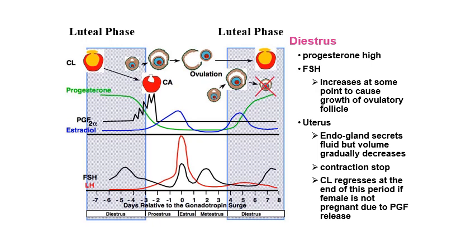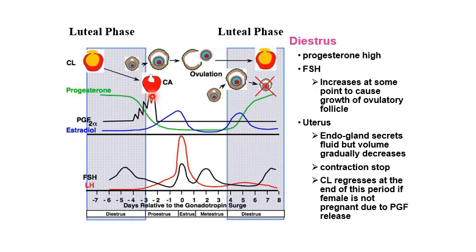The diestrus stage is characterized by a high level of progesterone due to the presence of a fully formed CL or yellow body. FSH increases at some point because of the growth of ovulatory follicles during this time. The endometrial glands secrete fluid but the volume gradually decreases, and uterine contractions stop. The CL regresses at the end of this period if the female is not pregnant, due to PGF2-alpha production from the uterus, causing the CL to regress into the corpus albicans.